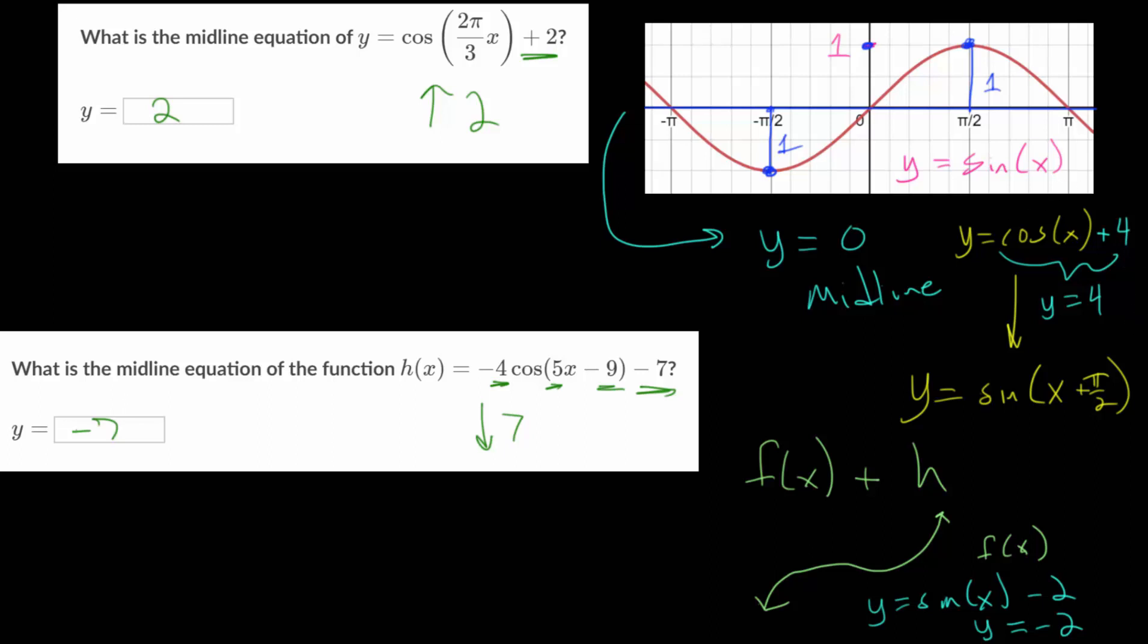And let's look at two more quick example problems just so that we can feel comfortable about this. And in this case, we have the sine function. And again, we really only need to focus on what we are adding or subtracting to this function. We know this affects the amplitude, this affects the period, and this affects horizontal shifting.